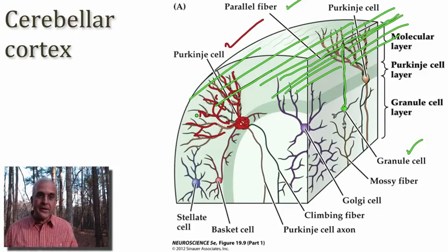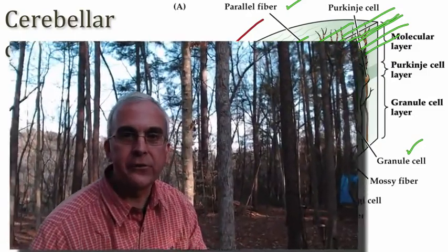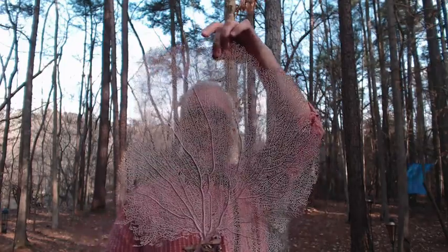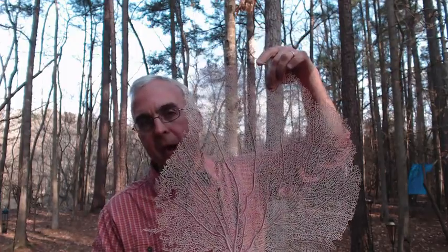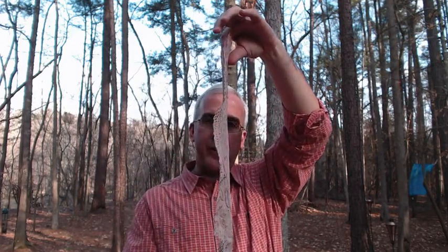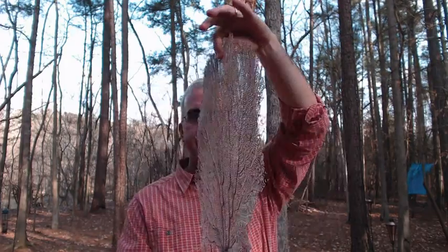I've brought a visual aid to illustrate what these Purkinje cell dendrites actually look like. What I've brought is my Purkinje neuron of the sea — actually, this is a sea fan, which is a type of coral that grows in ocean waters. What's distinctive about this sea fan is that the arborizations of its structure are restricted to a very narrow plane, in the same way that the dendrites of the Purkinje cells are constrained in a very narrow plane.